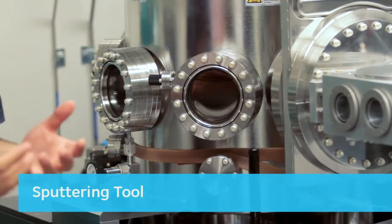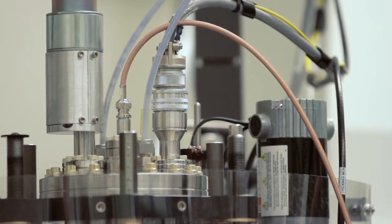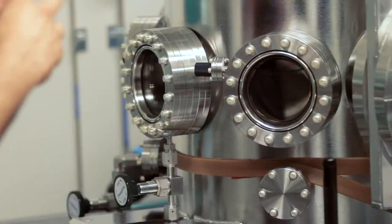Sputtering is a technique whereby you put down very thin layers, less than 100 nanometers even is what we're looking for. Remember, thinner is better—it lets more light in—but it still has to be thick enough to do the job.